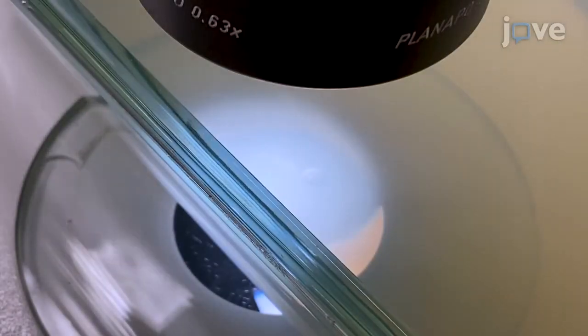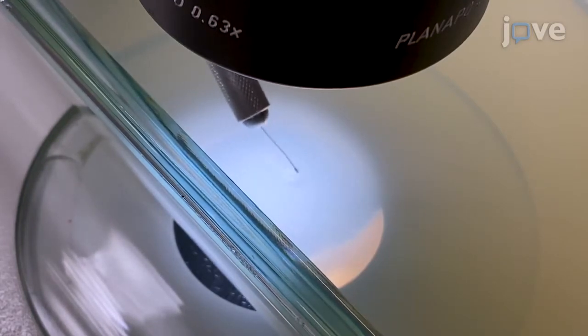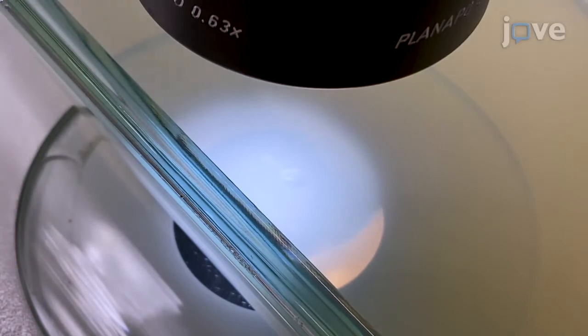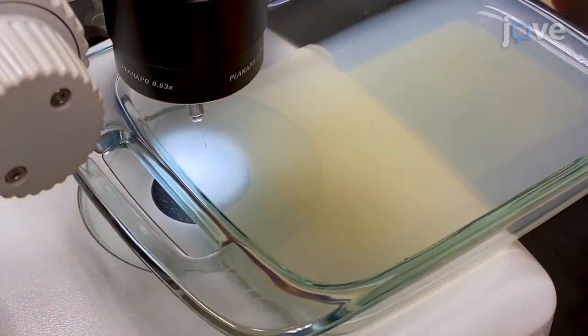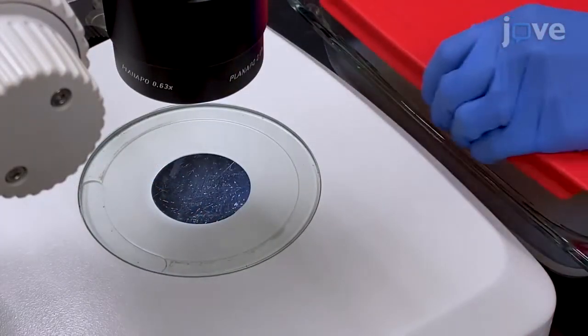Place the gravid adult into the alkaline hypochlorite solution and tap the nematode to disrupt the cuticle and to release eggs. When a total of five adults have been placed evenly around the E. coli lawn in the same manner, place the lid back onto the plate.